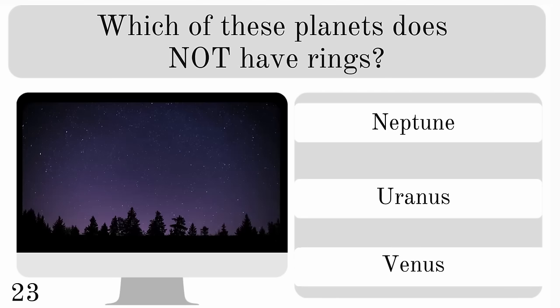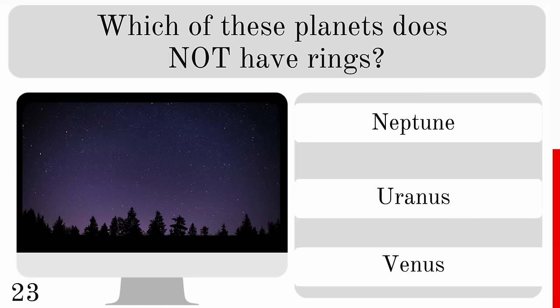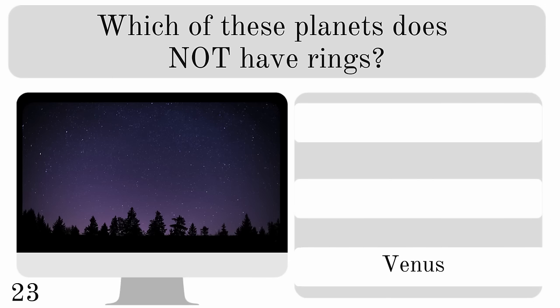Which of these planets does not have rings? Neptune, Uranus or Venus? And the one here without rings is Venus.